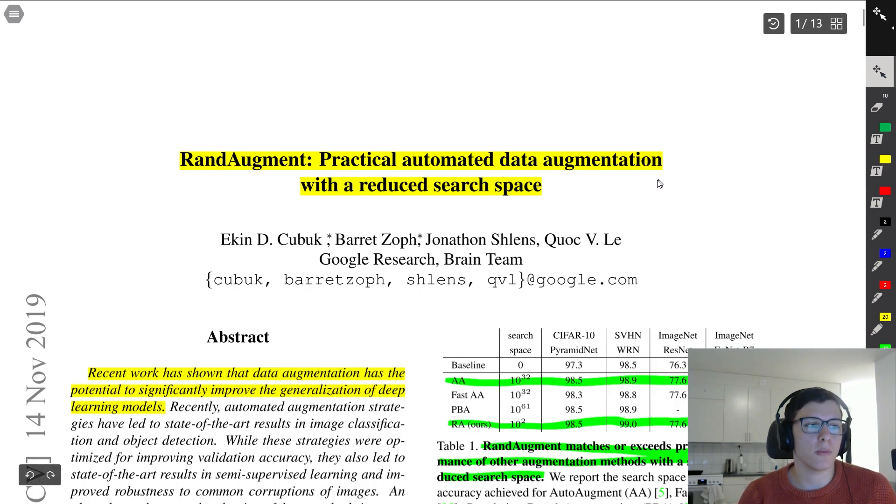Why this paper is so interesting is that it has this reduced search space. There are previous automated data augmentation methods, for example auto-augment, but it just had so many hyperparameters that this paper shows all kinds of issues with. Let's go through it and I think we'll learn a lot from it.